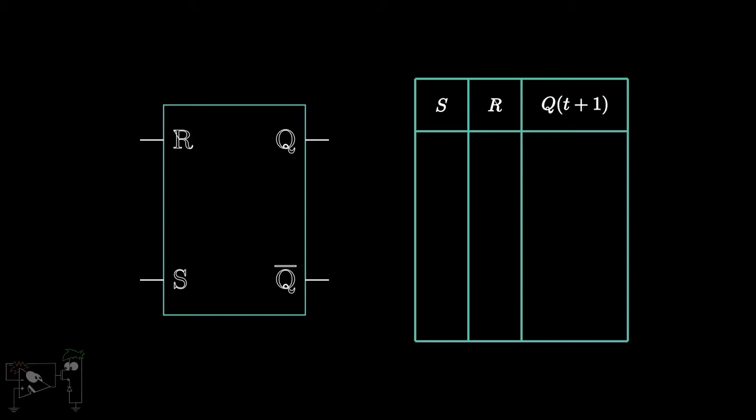If both the inputs are 0, then the output of the flip-flop will not change, that is, it retains its previous state. If S is 0 and R is 1, then the output will be low, irrespective of the previous state.